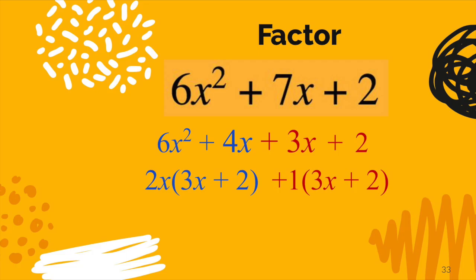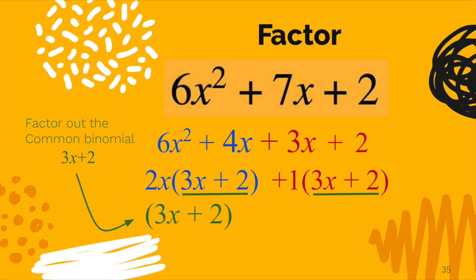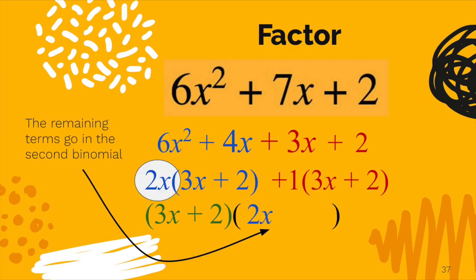Now, if you notice, they both have what's called a common binomial, 3x + 2. So maybe you remember this from Algebra 1, but you will factor that out and write it out front. So I factored it out, I wrote it, and then you write what's left behind. We have a 2x that was left behind for the first term and then a positive 1 that was left behind for the second term.